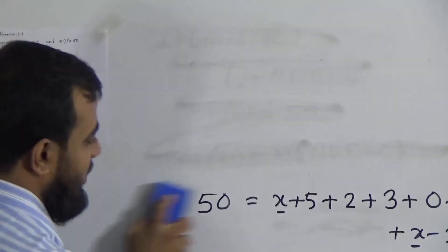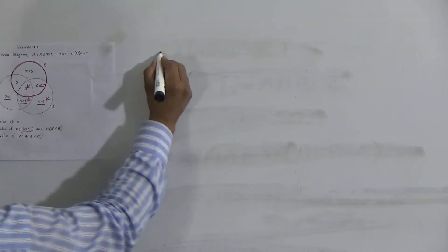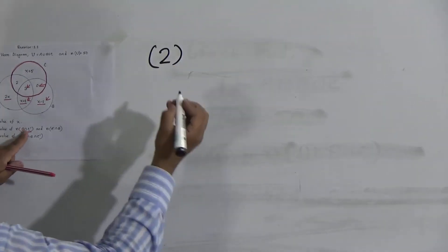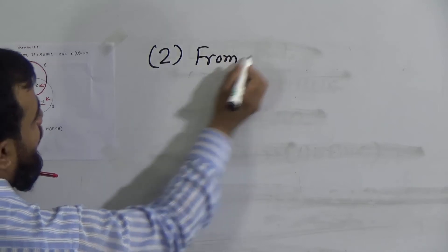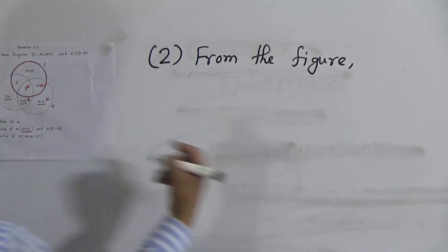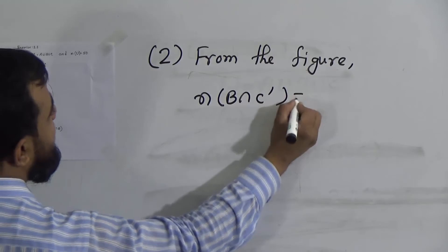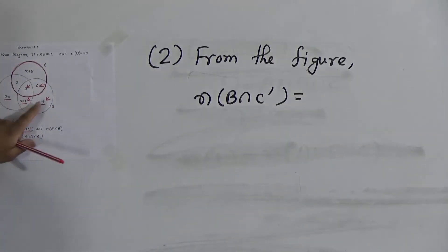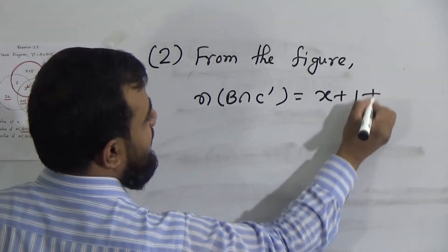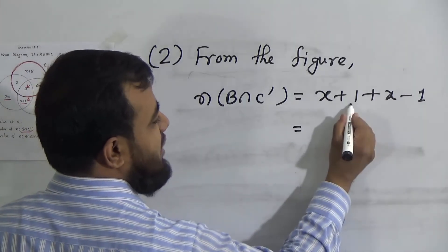Now for the solution of Activity 2: from the figure, n(B∩C') equals the addition of the two disjoint sets: (x+1) + (x−1). The +1 and −1 cancel each other, so x + x = 2x.